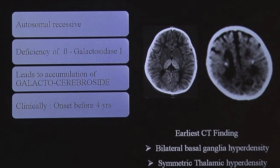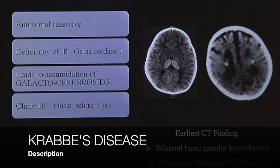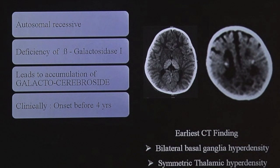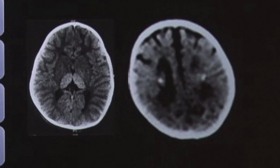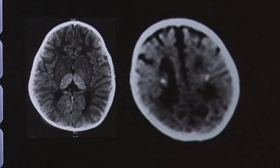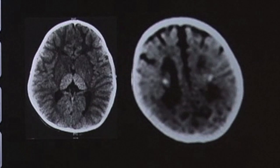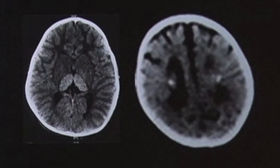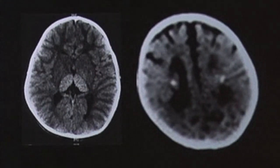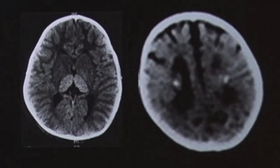The next common condition affecting periventricular white matter is Krabbe's disease, which is again an autosomal recessive disorder due to deficiency of beta-galactosidase-1 enzyme, leading to accumulation of galactocerebrosidase in the brain, which damages white matter initially and the basal ganglia and thalami a little later. Age of onset is earlier compared to MLD.